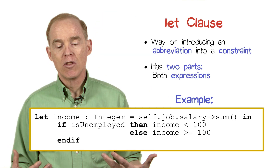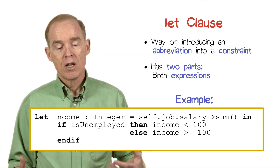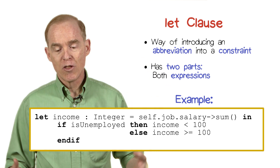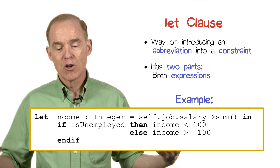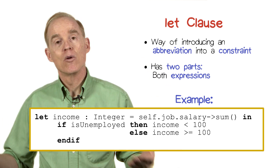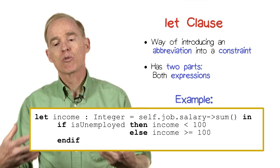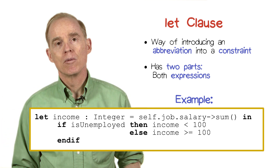And then we could have an expression — in this case it's an if-then-else expression — that says if someone is unemployed, then their income is less than 100, else their income is greater than or equal to 100. It's just as if we had typed in the long expression in both the places where we used it.